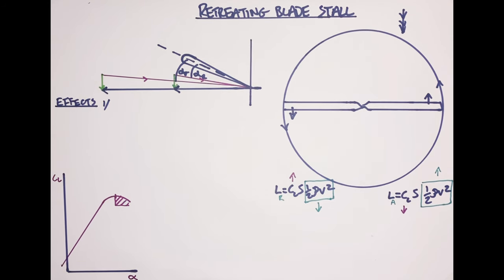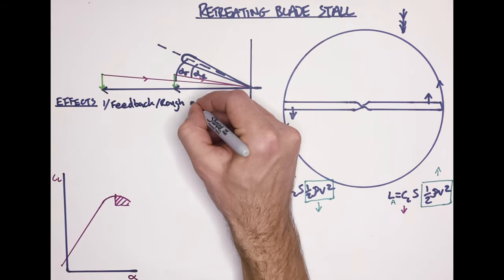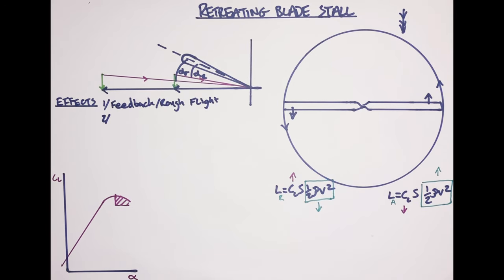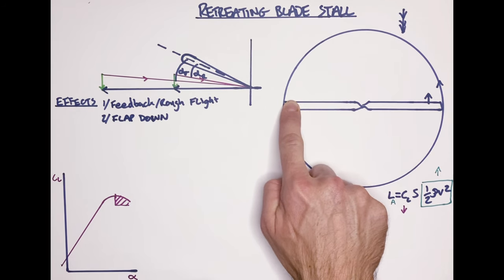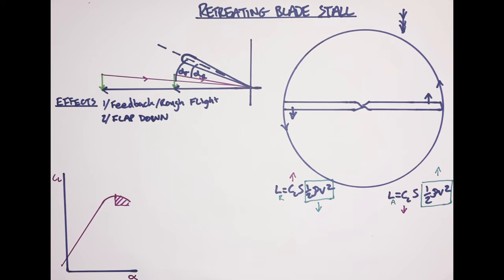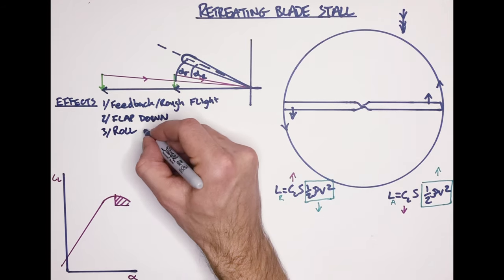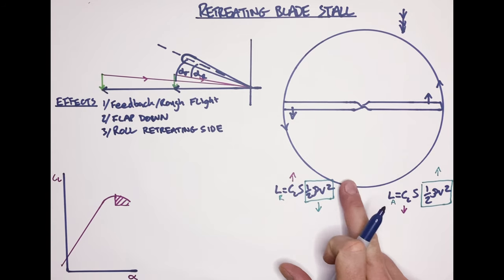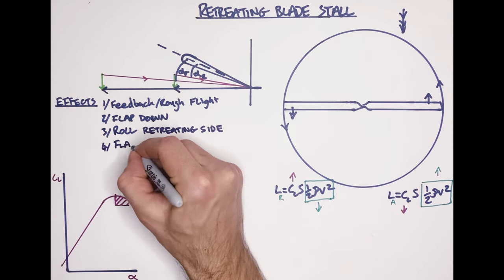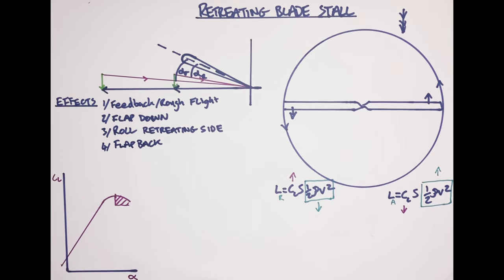What we're going to notice as pilots is pretty rough control actions - the aircraft is going to start to bump and generally feel not particularly smooth; you might even feel feedback in the controls. The blade loses lift, flaps down, and stalls further. Because of the latency in the flap-down, we're going to get a flapping down on the retreating side which continues all the way around to the rear. So we're going to get a roll to the retreating side, and also a flap-back - none of the things you want when traveling at relatively high speeds.